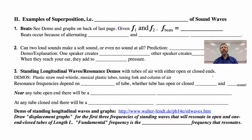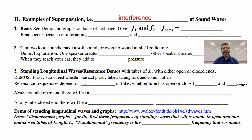Our next topic in sound is examples of superposition — what is the other word for superposition of waves? That would be interference. That is when two waves are at the same place at the same time, how they combine and add.